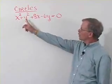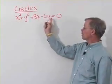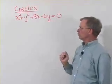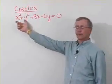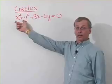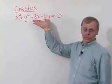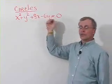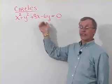Let's look at x squared plus y squared plus 8x minus 6y equals 0. Well, this x squared plus y squared seems like a circle, but what are these other terms doing here? Well, they indicate to us that the circle center is not 0, 0.